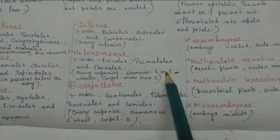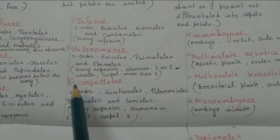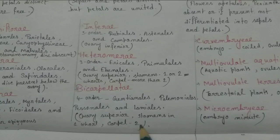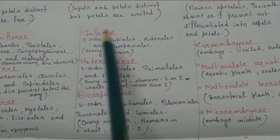In case of Heteromerae, the stamens are in one or two whorls and carpels more than two. But for the Bicarpellatae, ovary superior, stamens in one whorl, and the carpel number is two. So it is called Bicarpellatae because the carpel number is two. There the carpel number is more than two.